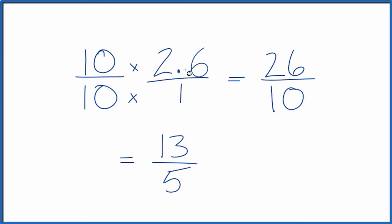So now 2.6, our decimal here, equals the fraction 13 fifths. This is an improper fraction. The 13, the numerator, is larger than the 5, the denominator.